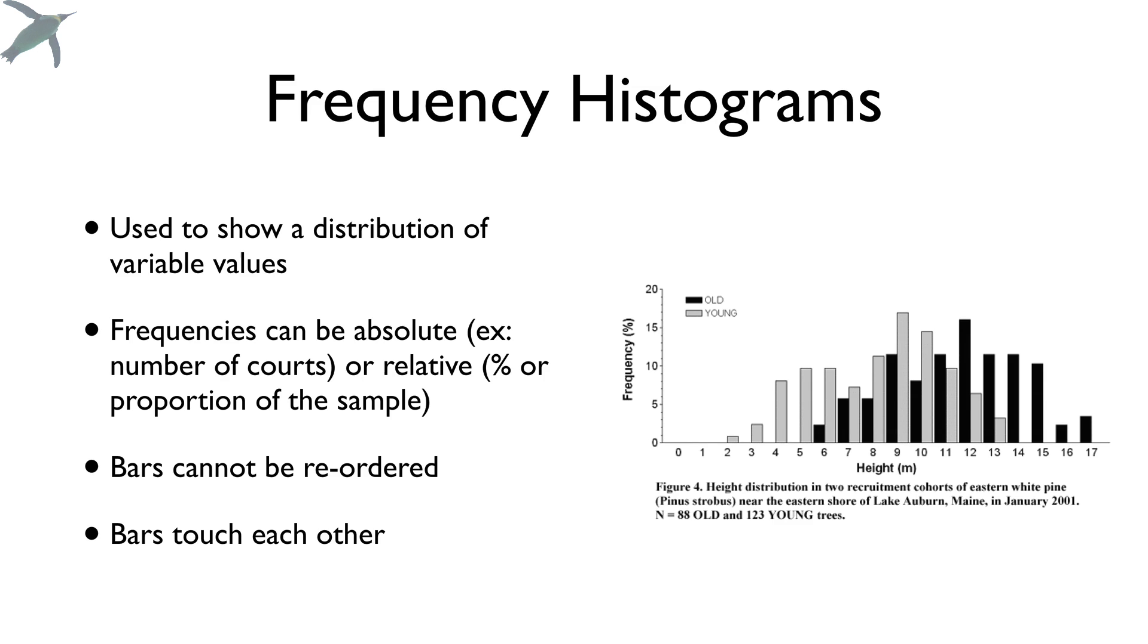Next we have a frequency histogram. This is used to show a distribution of variable values. So instead of showing different categories, like before we had the different types of trash, this is a single variable. And in this case, it's height. We're looking at the distribution of different heights that were observed in a particular species of pine. And you notice that bars can't be reordered and they touch each other.